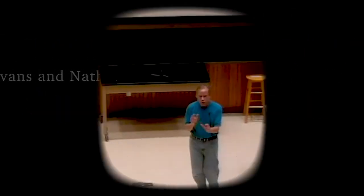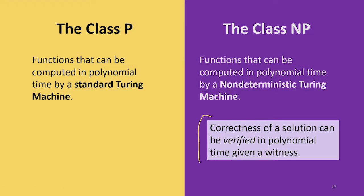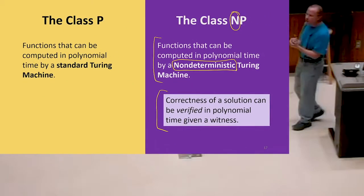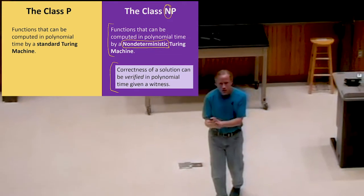So what the class NP is — we're going to start with two informal definitions. The book focuses mostly on the second one: that NP is the class of problems where we can verify a solution. If we're given a witness, we can verify in polynomial time that it's correct. The name NP comes from non-deterministic Turing machine — the N stands for non-deterministic. NP is the class of functions that can be computed in polynomial time using a non-deterministic Turing machine.